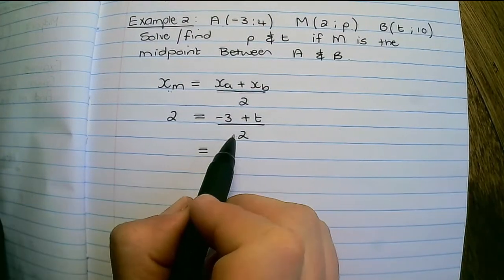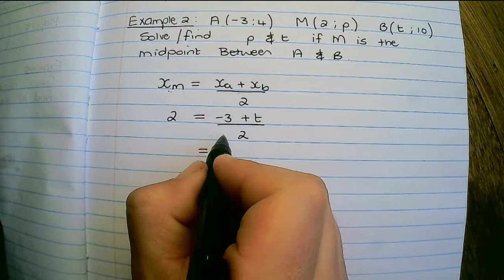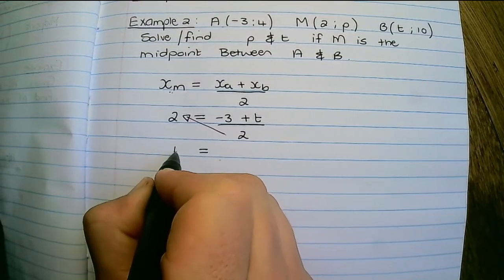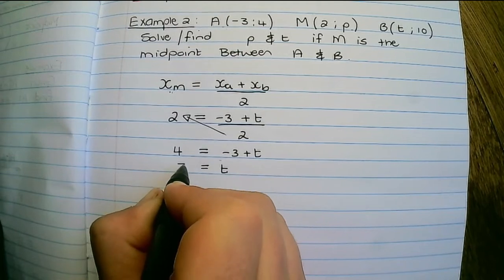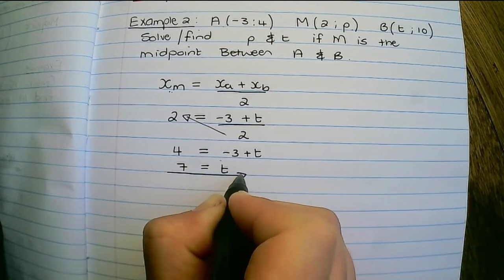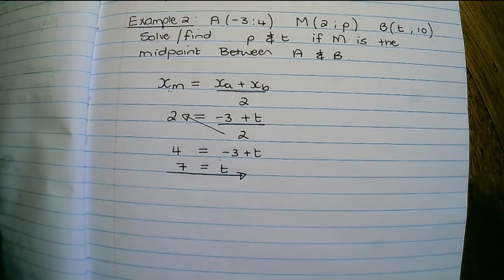To get rid of the fraction I multiply everywhere by two, or I can just cross multiply, and then I transpose the negative three in order to find T. So T is equal to seven.